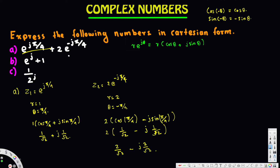Now all we have to do is add z1 and z2 together. z1 is 1/√2 plus j times 1/√2, and z2 is 2/√2 minus j times 2/√2.